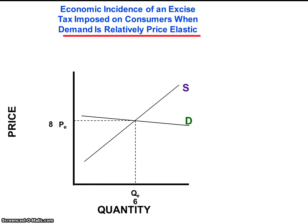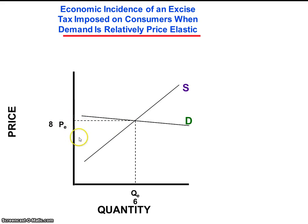When we say that demand for a good is relatively price elastic, we mean that consumers are fairly sensitive to price changes, adjusting the quantity they demand of a good by a large percentage relative to a small change in prices. Economists typically represent relatively price elastic demand with a fairly flat demand curve, indicating that over a relatively small range of prices along the vertical axis, consumers adjust their consumption of the good by a relatively large amount along the horizontal axis.